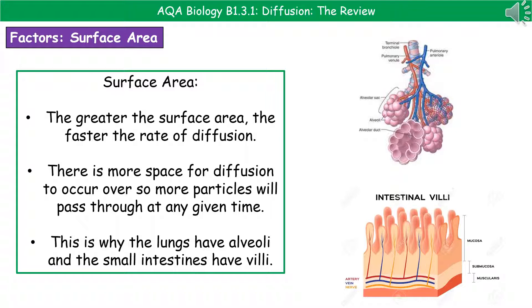The reason for that is that if we've got a larger surface area, then we've got more space for diffusion to occur over, which just means that in any given time, more particles are able to pass through that membrane. So this is why we see a few of these exchange surfaces with these adaptations to increase their surface area. So we've got the alveoli and the villi, and we're going to look at those in a bit more detail in a future video.